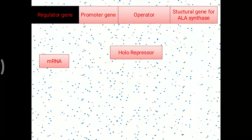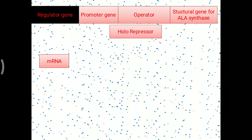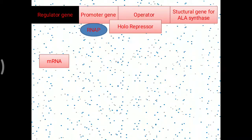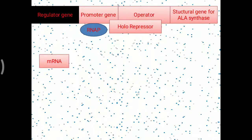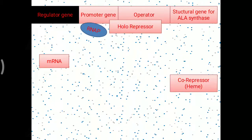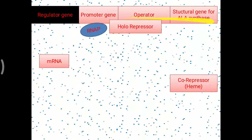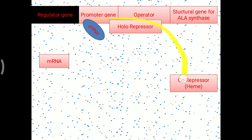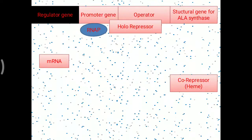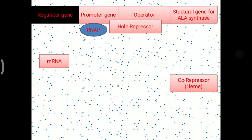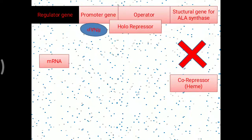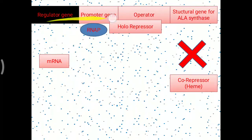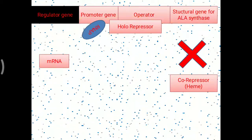The holorepressor attaches over the operator site. Once it is attached at the operator site, the RNA polymerase needed for heme synthesis cannot move further over the structural gene. So the enzyme is not synthesized and the heme molecule will not be produced. Ultimately, heme synthesis is stopped — that is the regulation of heme synthesis.